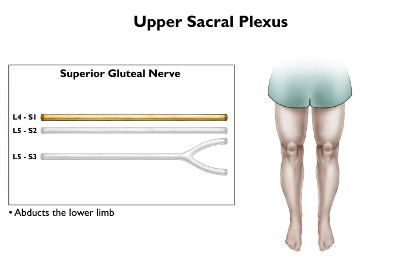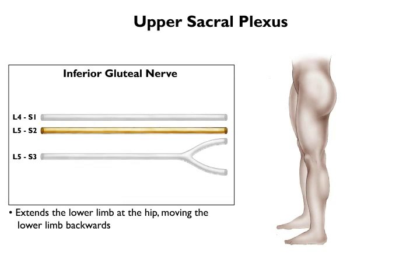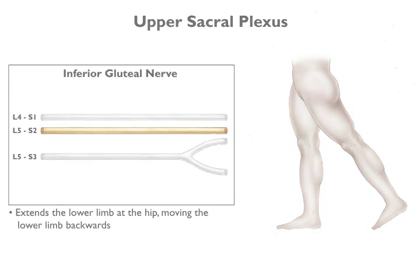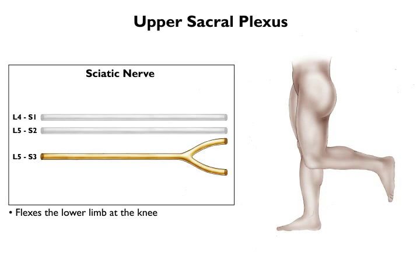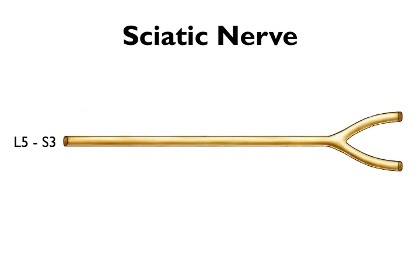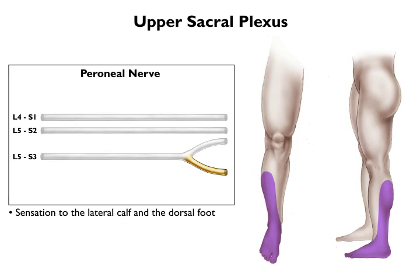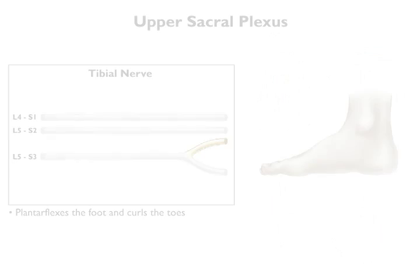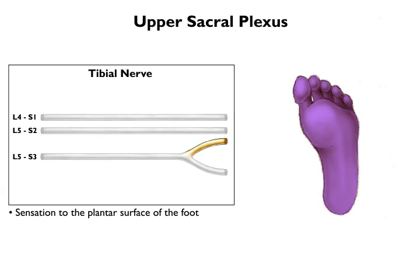Now, on to the upper sacral plexus. The superior gluteal nerve controls the muscles that abduct the lower limb. The inferior gluteal nerve lets you extend your lower limb at the hip by moving it backwards. The sciatic nerve controls the muscles that allow you to flex your lower limb at the knee. Behind the knee, the sciatic nerve divides into the peroneal nerve anteriorly and the tibial nerve posteriorly. The peroneal nerve allows you to dorsiflex your foot and toes and provides sensation to the lateral calf and the dorsal foot. The tibial nerve allows you to plantar flex your foot and curl your toes, and provides sensation to the plantar surface of the foot.